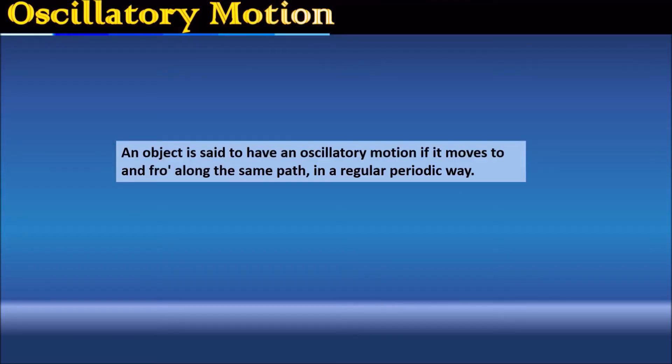Oscillatory motion. An object is said to have an oscillatory motion if it moves to and fro along the same path in a regular periodic way.